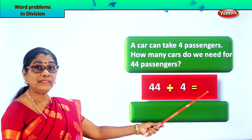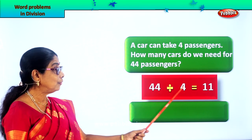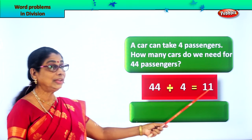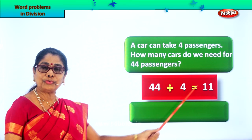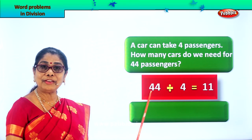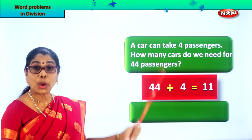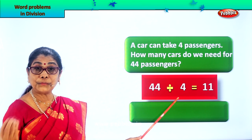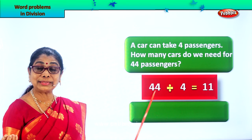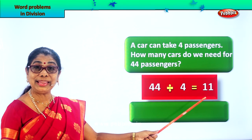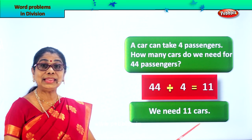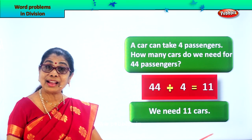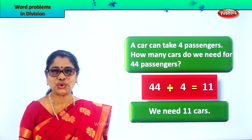So 11 — 11 fours are 44, 4 into 11 is 44. One car holds 4 passengers, and for 44 passengers we need 11 cars. So we need 11 cars. Did you enjoy? Good.